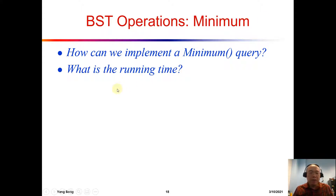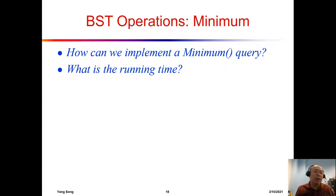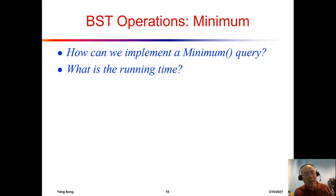What is the running time? Well, is that O log n? Or we should say this is theta height, so theta H. We still have to consider whether it is a good BST, a balanced BST or not. If you are lucky, we have a super balanced BST and then it could be O log n. And if you are unlucky, it could be O(N). So that's the running time of the minimum.